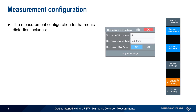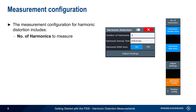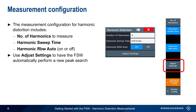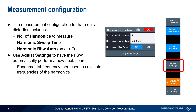The parameters needed for a harmonic distortion measurement include the number of harmonics to measure, the sweep or measurement time, and whether or not the resolution bandwidth should be automatically adjusted. Pressing the Adjust Settings button causes the FSW to automatically search for the peak, that is the fundamental. The FSW will then use this frequency to calculate the frequency of the harmonics.